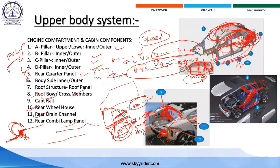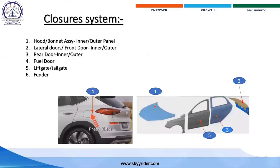Closures are body parts that open and close frequently so you can go inside and outside the vehicle, and also replace damaged parts. The major closure parts are hoods (covering the engine room), lateral or front doors, rear doors, tailgates for the luggage compartment, and fuel doors.